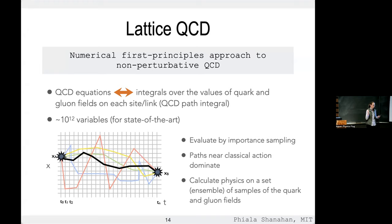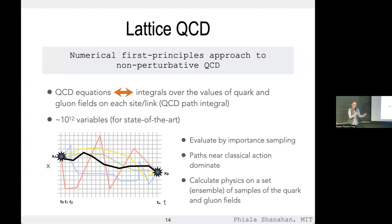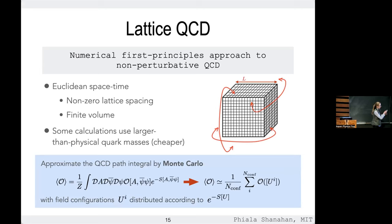In such a high-dimensional space you can't do naive Monte Carlo sampling — you have to do importance sampling. From quantum mechanics we know that paths near the classical path dominate; it's the same in field theory. We sample more important contributions more frequently and less important ones less, to efficiently evaluate these high-dimensional integrals.